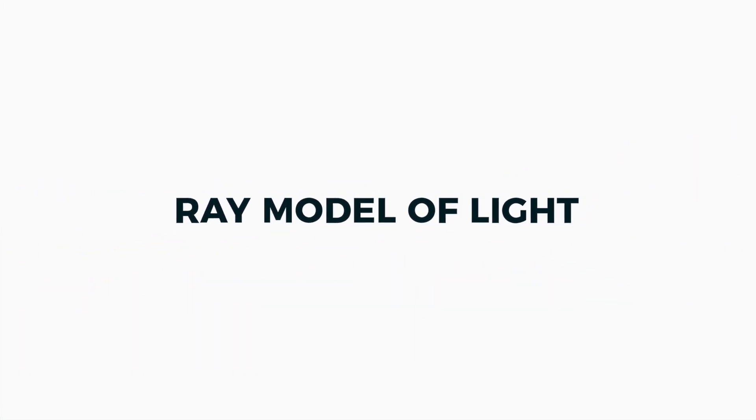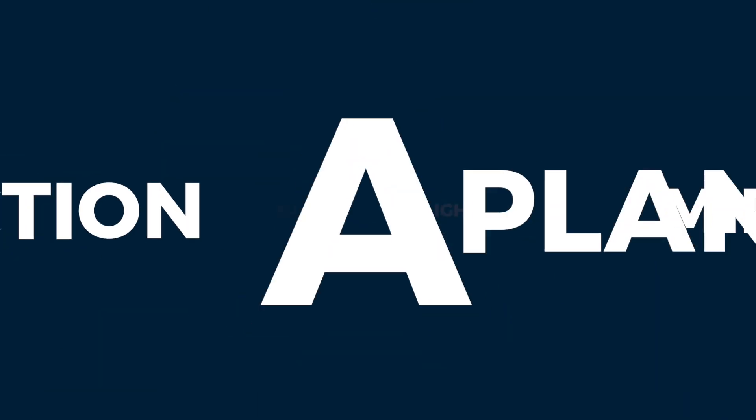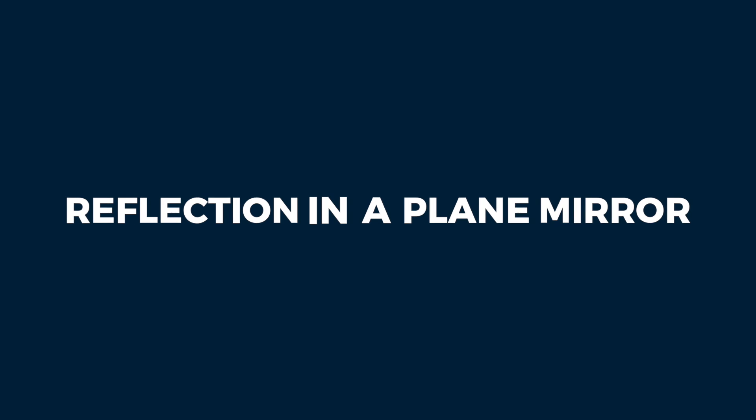Hello everyone, today we're going to take a look at the ray model of light. In this model it states that light rays travel in straight lines even when they bounce off a surface. The bouncing off of light rays of a surface is known as reflection.